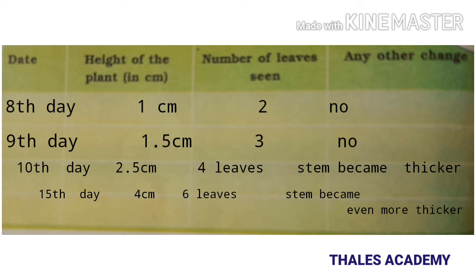On the eighth day: number of leaves is two, no other change. On the ninth day: height is 1.5 centimeters, number of leaves is three, no further changes. On the tenth day: the height turns to 2.5 centimeters and four leaves come out.